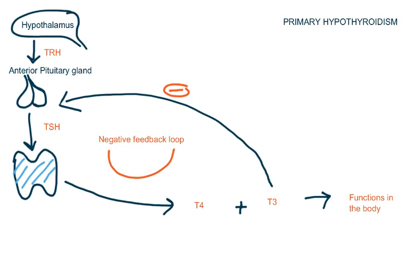So what did we learn up till now? Hypothalamus sends TRH, TRH goes to the anterior pituitary and releases TSH, TSH goes to the thyroid gland and forms T4 and T3, T3 performs all its functions and sends a negative feedback to the pituitary — and this is how the cycle continues.